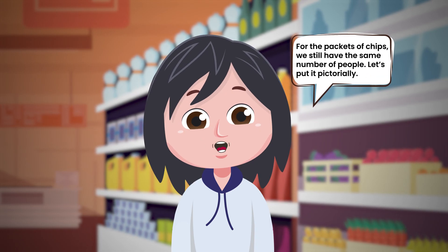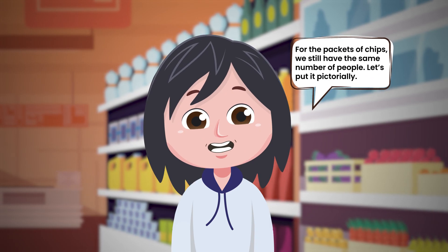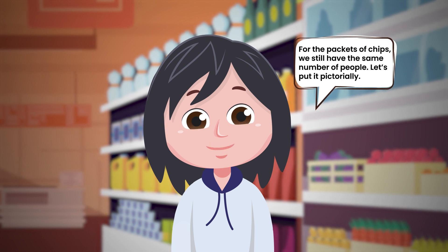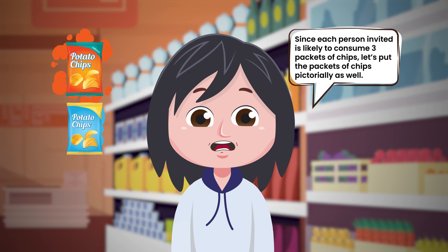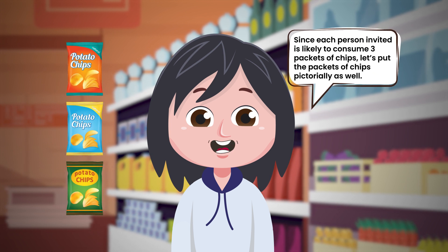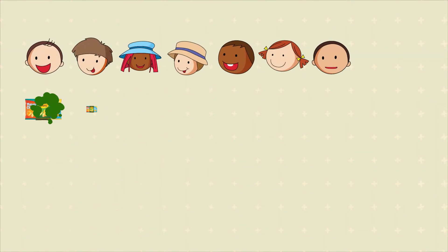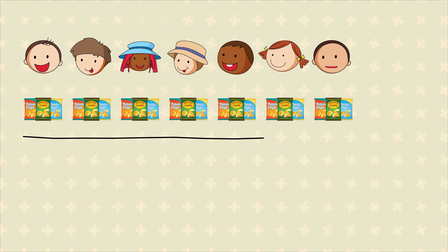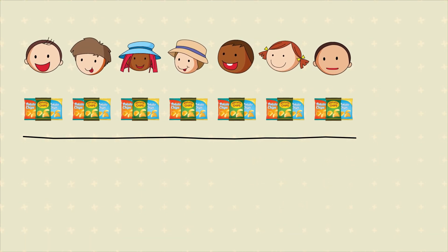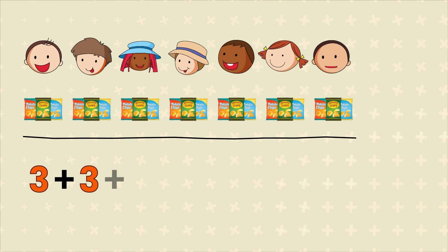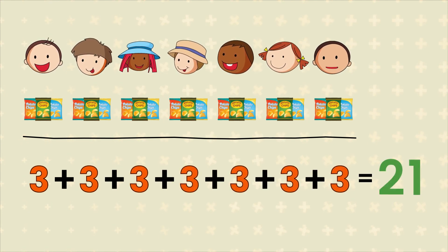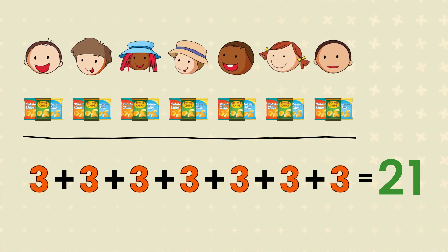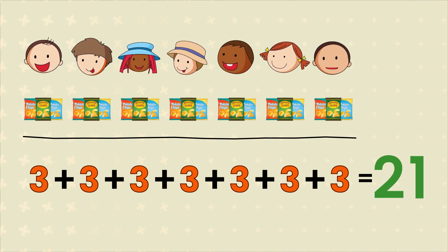For the packet of chips, we still have the same number of people, so let's put it pictorially. Since each person invited is likely to consume 3 packets of chips, let's put the packets of chips pictorially as well. 7 people in the party and 3 packets of chips per head. In simple terms, it is 3 plus 3 plus 3 plus 3 plus 3 plus 3 plus 3. That is 21. We need to buy 21 packets of chips for everybody.